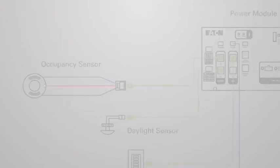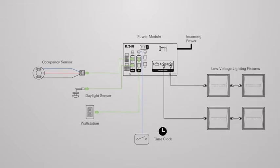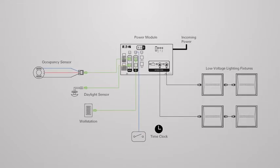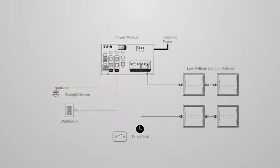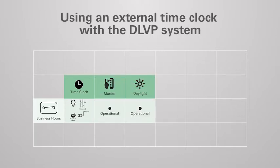How the power module responds to the time clock will depend on if there are occupancy sensors connected to the system. This portion of the video will discuss system behavior when there are no occupancy sensors connected. When the time clock contact closes and the system enters business hours mode, lighting will turn on automatically to user programmable scene number five. Controlled receptacles will also turn on. Manual wall station and automatic daylight controls will be operational to adjust light levels as needed.